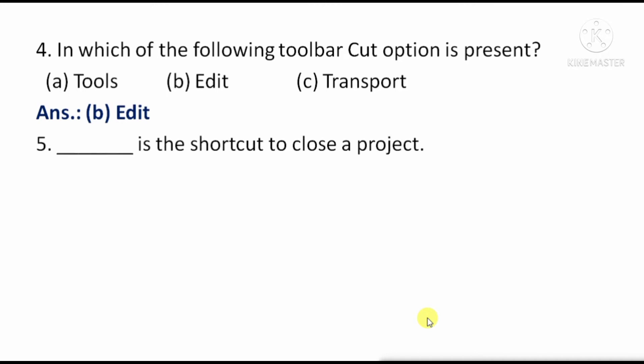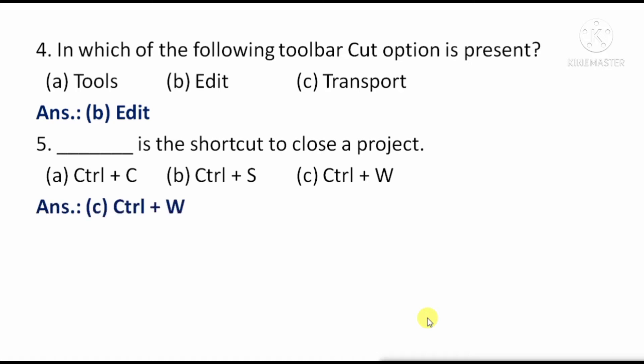Next question — What is the shortcut to close a project? Option A: Ctrl+C. Option B: Ctrl+S. Option C: Ctrl+W. The right answer is Option C, Ctrl+W.